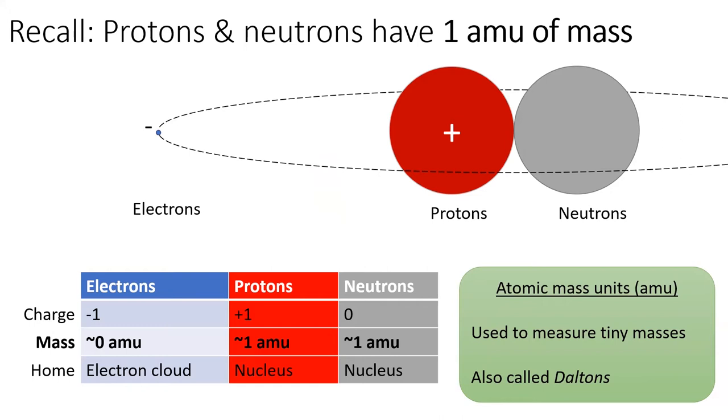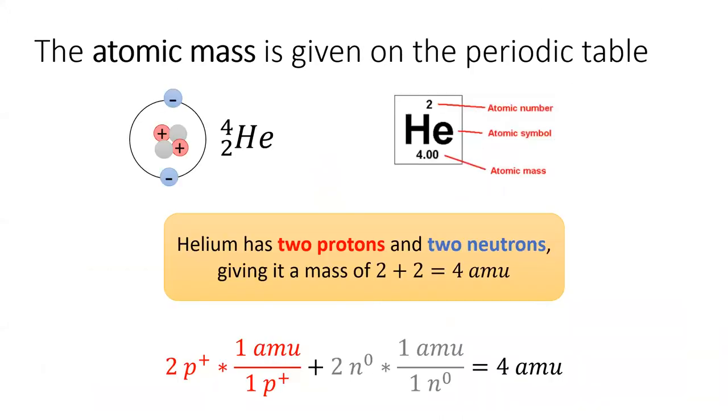The atomic mass, often called the atomic weight, is one of the most important numbers on the periodic table. It gives the average mass of an atom of that element.